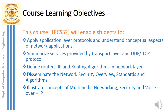Firstly, let's discuss the objectives of the course Computer Networks and Security. The course will enable students to apply application layer protocols and understand conceptual aspects of network applications. The aim is to summarize services provided by the transport layer and UDP and TCP protocols. It also enables students to define routers, IP, and routing algorithms in the network layer.